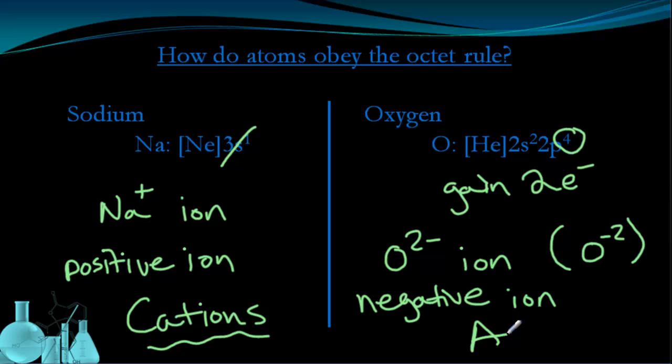So what are we doing here? We're basically showing that atoms can obey the octet rule either by gaining electrons, like oxygen did, or losing electrons, like sodium did. And when they do that, when they change the number of electrons, they gain a charge, either a positive or a negative charge. So let's look at how we can represent that a little bit more explicitly.